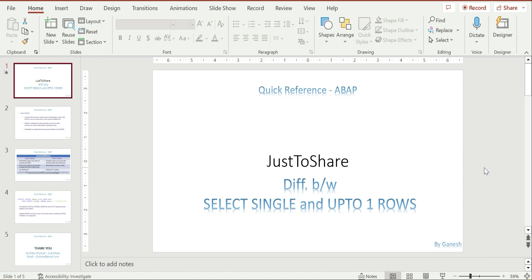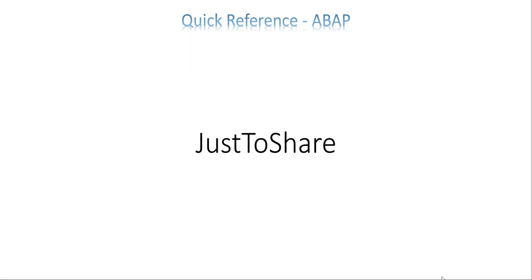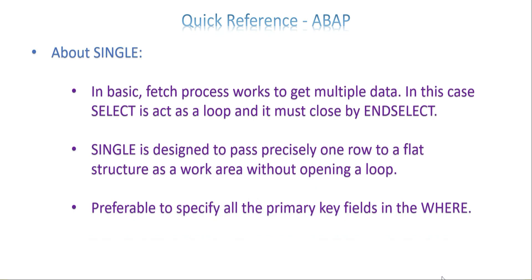We are going to understand why we need SELECT SINGLE and what are the properties of SINGLE, then compare between SINGLE and UP TO ONE ROWS. We are also going to refer to what the product documentation says about these two, and which is better for performance.